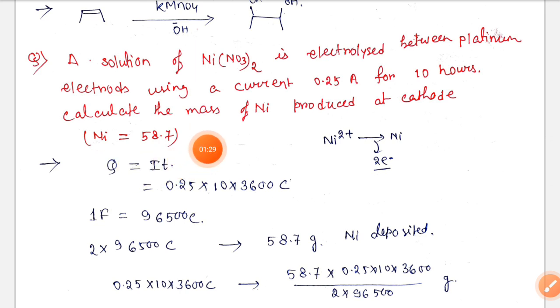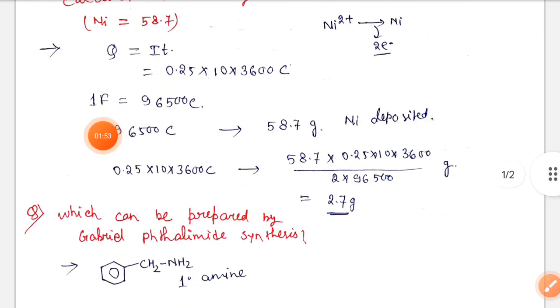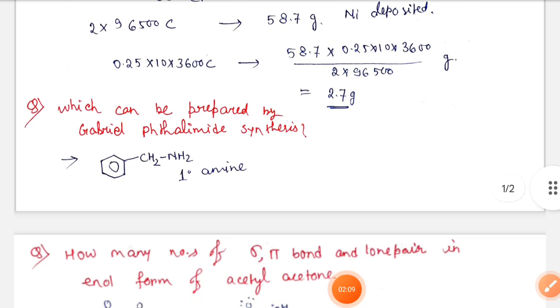Nickel atomic weight 58.7. Here the electron changes Ni2+ to Ni, that is two electrons. So we know that Faraday's law, q is equal to it, that is 0.25 into 10 into 3600, this is coulomb. And 1 Faraday is equal to 96500 coulomb. This is given in the question. So 2 into 96500 coulomb, when electricity passed then 58.7 gram nickel deposited. So this equivalent is equal to 2.7 gram.